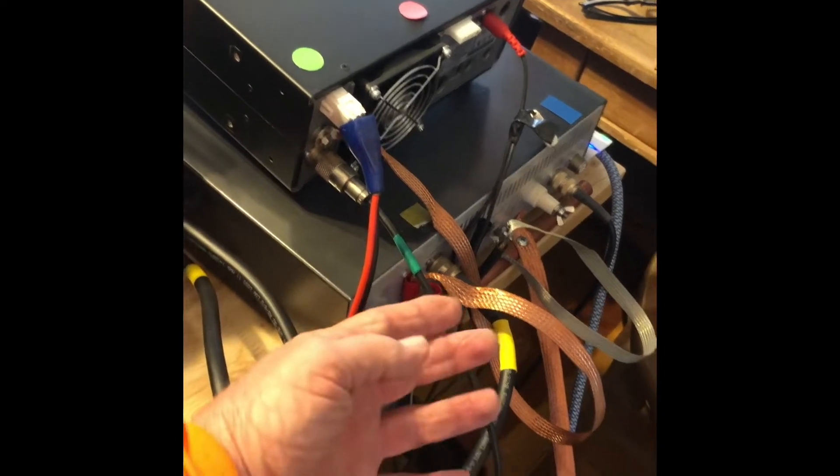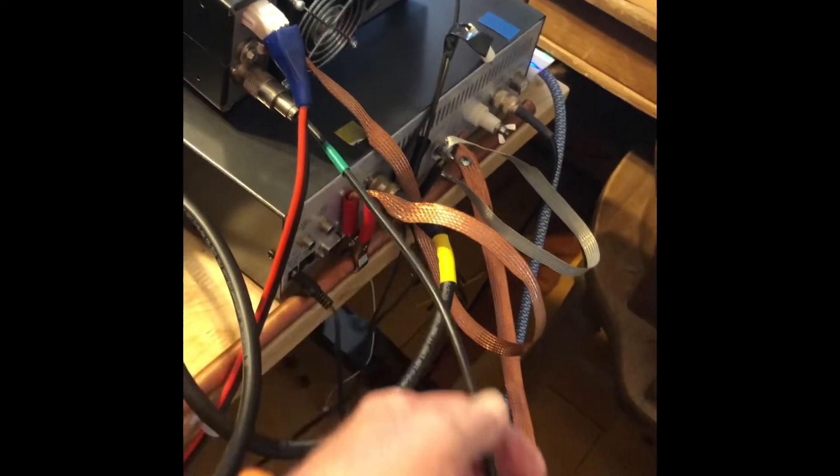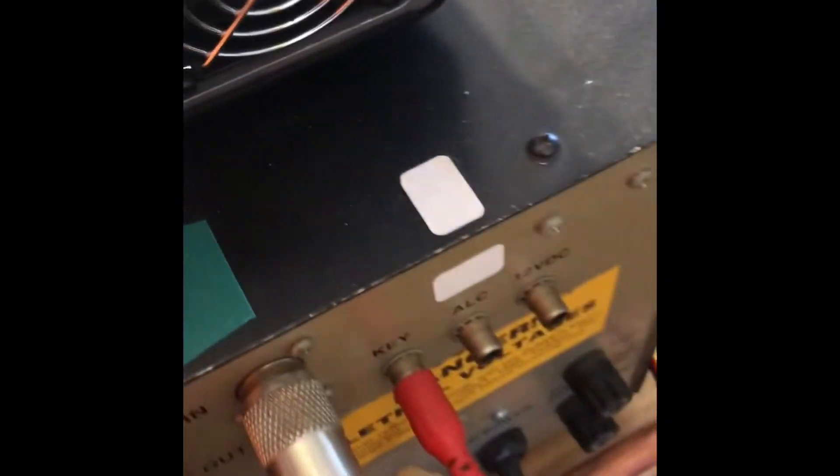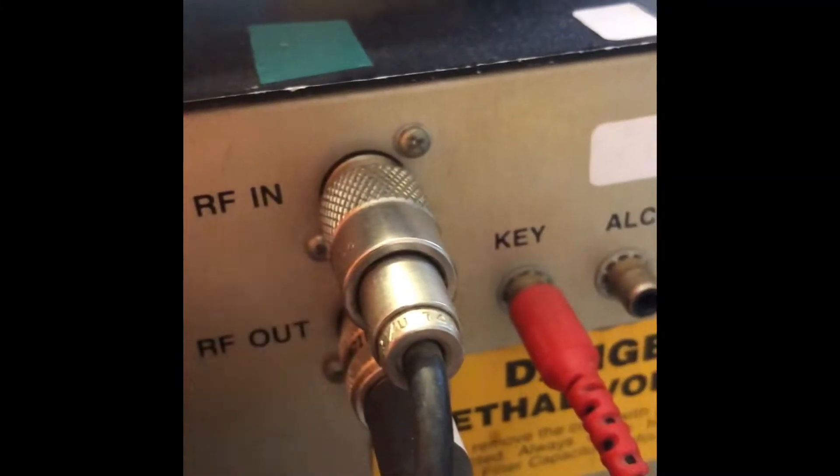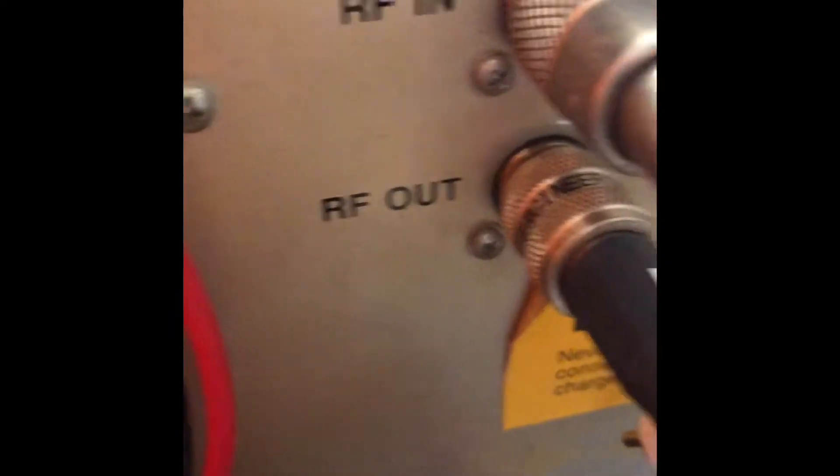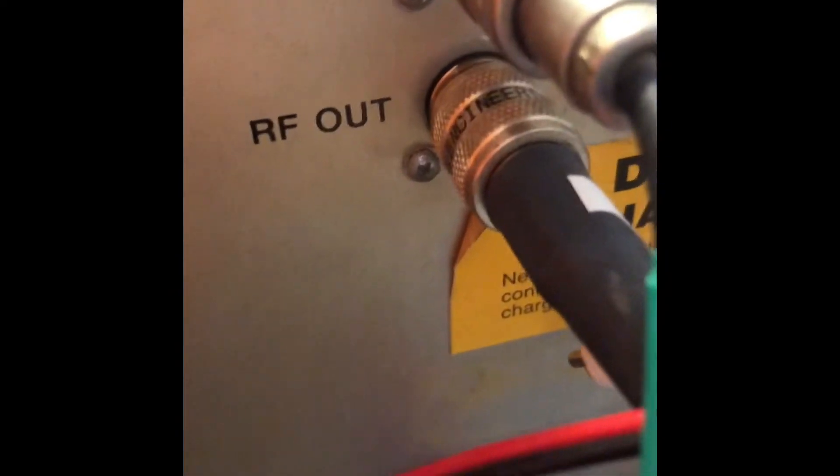Right there, the jumper cable comes out here and it goes right over here to the input RFN to the amplifier. The RF out of the amplifier, the big heavy coax that you see there...